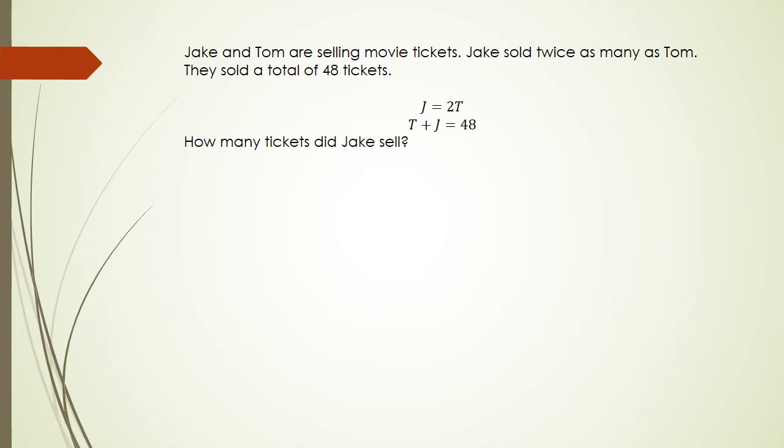Okay, so what we do know is, in the previous question we talked about simultaneous equations, it's kind of very similar in this case except this time we're just doing substitution straight away because what we have is j equals 2t and then the second equation is t plus j equals 48.